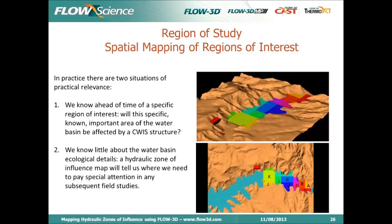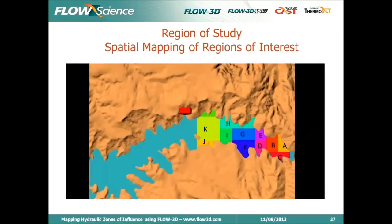There are two situations of practical relevance. One is when you know ahead of time a specific region of interest — will this important known area of the water basin be affected by a CWIS structure? That's a question we can answer using numerical modeling. In other situations where we know very little about the basin and all its ecological details, the hydraulic zone of influence map will tell us where we need to focus our efforts in any subsequent field studies. So there are two ways of looking at this — we'll be looking at regions A through K.